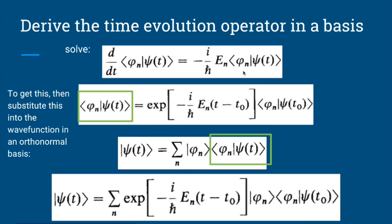We have the time derivative of this coefficient equals the coefficient again multiplied by minus i over ℏ times the eigenenergy. This is a differential equation — if we take the time derivative of this thing, we get the thing back multiplied by this constant. We know the form of the solution to that differential equation: it's an exponential function. So the solution must be this exponential line right here.